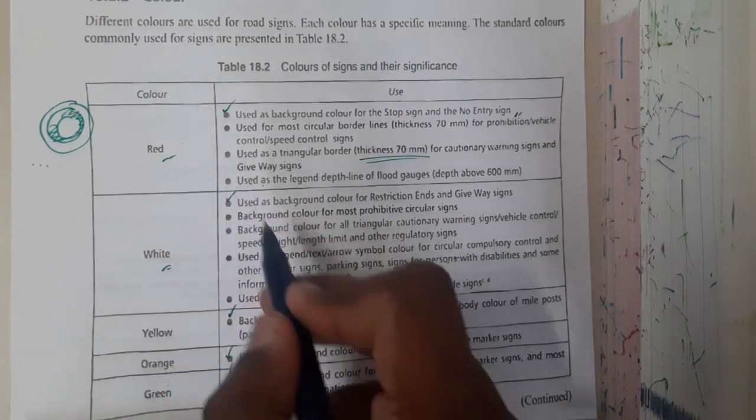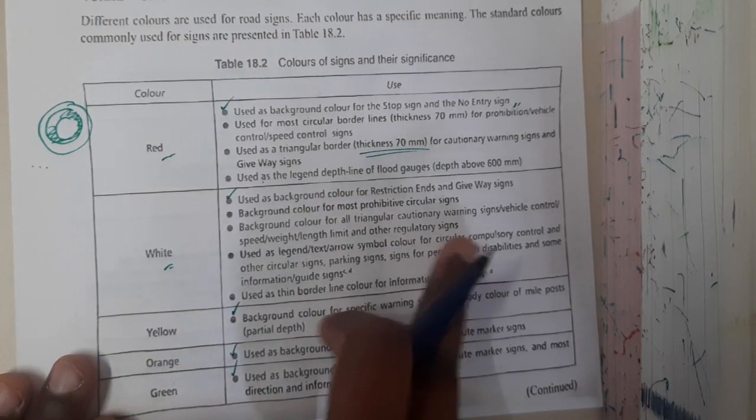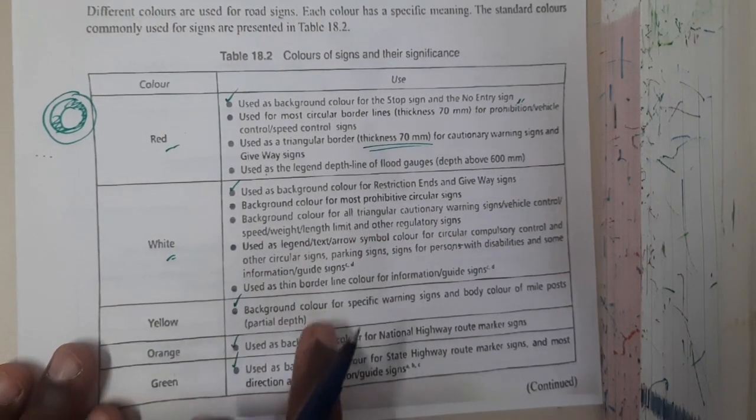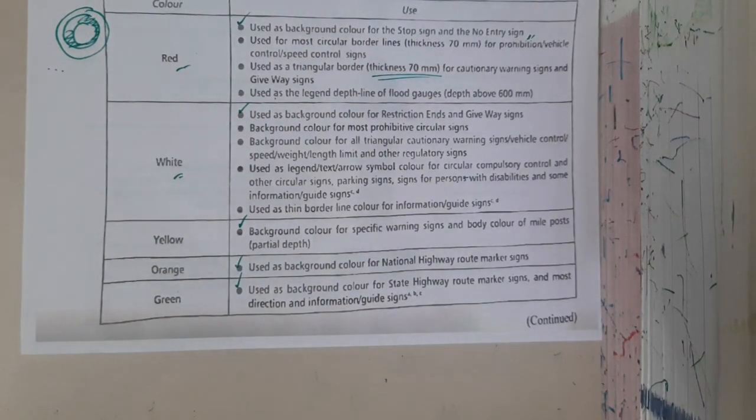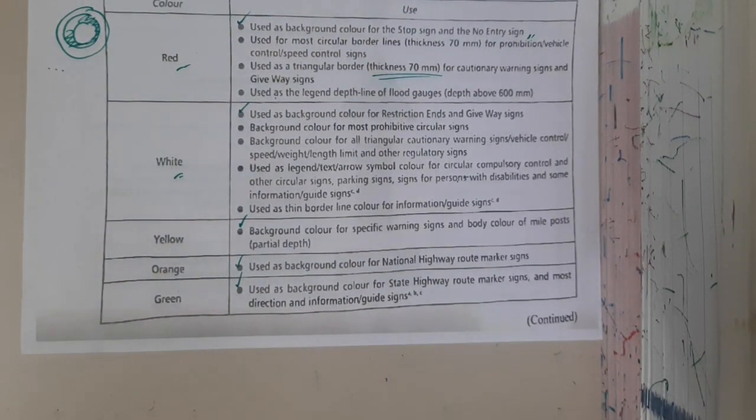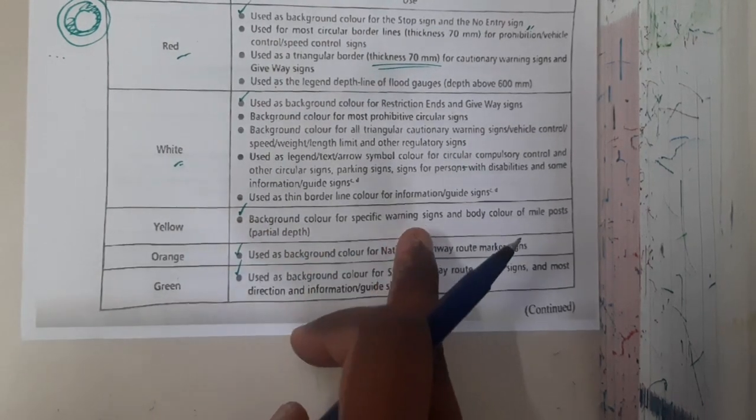Background color for all triangular caution signs are also used. These are some more uses you can say. Similarly, yellow, orange, green, and these colors are a bit rare. Yellow is used as background color for specific warnings and body color of poles.